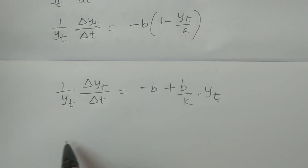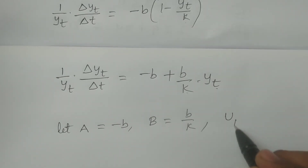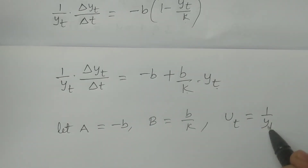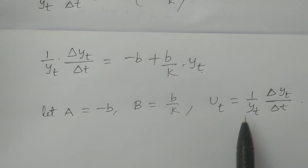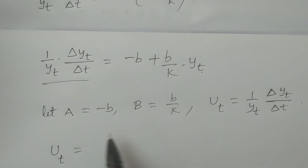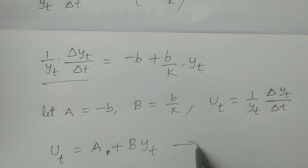Now, let capital A equal to minus b and capital B equal to b/k. Let u_t be defined as (1/y_t) times Δy_t/Δt. Therefore, this expression becomes u_t equals capital A plus capital B times y_t, which is looking to be a straight line equation.